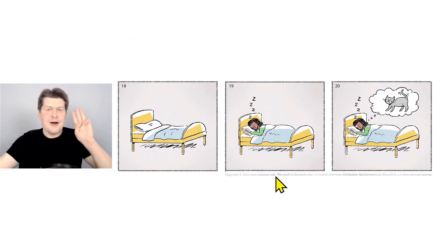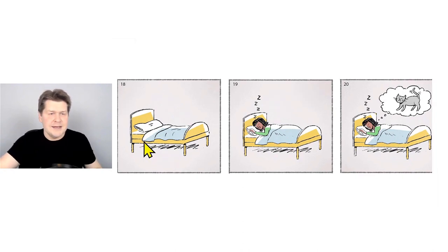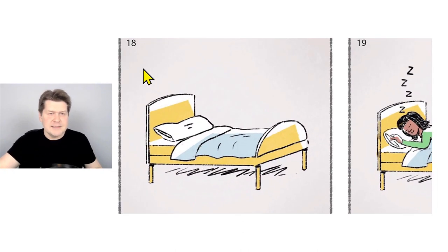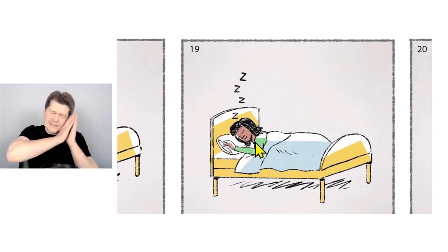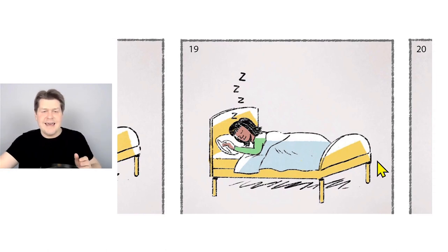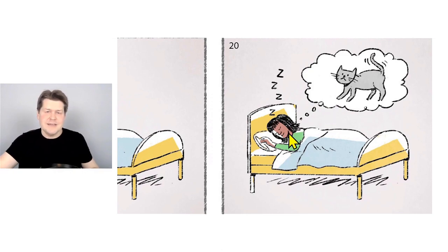Hi, everyone! Here are three pictures — one, two, three. And what is in these pictures? Well, in these pictures, there is a bed. This is a bed. So in this picture, there is a bed. And then in this picture, there is a woman sleeping in the bed. And then in this picture, the woman who is sleeping in the bed is dreaming — she is having a dream.